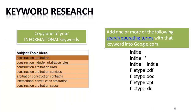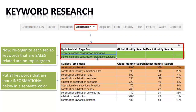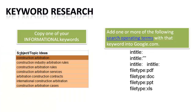Going forward from there, we're going to take those subject ideas. A subject idea — for example, construction industry arbitration rules — someone's not looking to hire a company. Denver, Colorado construction arbitration services — that's a sales page; they're looking to hire someone. But these keywords are subject ideas, topic ideas. They're informational, resourceful keywords that people are typing in.